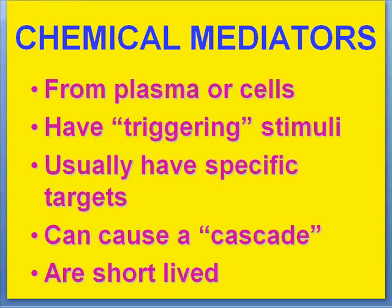Chemical mediators usually have specific targets, and they almost never work directly. They are often involved in a cascade — like the coagulation cascade — in which they are part of a chemical process that attaches to something, triggering another thing, and then another. Last but not least, the chemical mediators of acute inflammation are short-lived: after they do their job, they are quickly degraded.